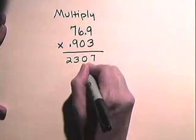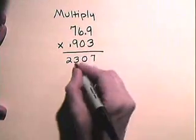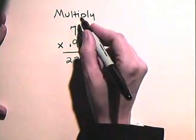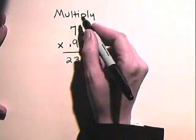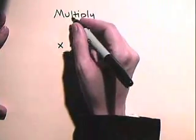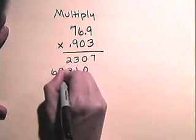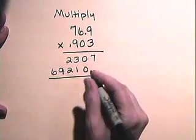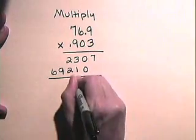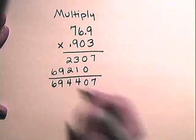We will bring down this 0. 9 times 9 is 81. 9 times 6 is 54, plus the 8 will be 62, and 9 times 7 is 63, plus the 6 will be 69. We will add: 7, 0, 4, 4, 6, 9.